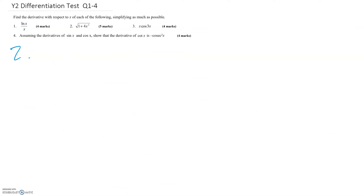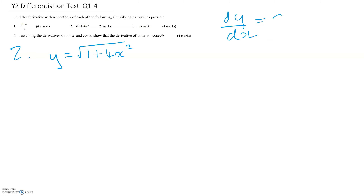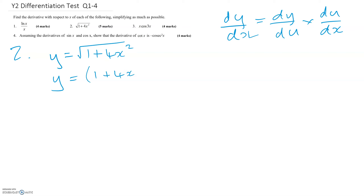Question 2 is our old friend the chain rule. Let's write it in this form: y equals the square root of 1 plus 4x squared. We're going to need the chain rule: dy/dx equals dy/du times du/dx. Let's rewrite the square root as a power of a half, so it's (1 + 4x²) to the power of a half.